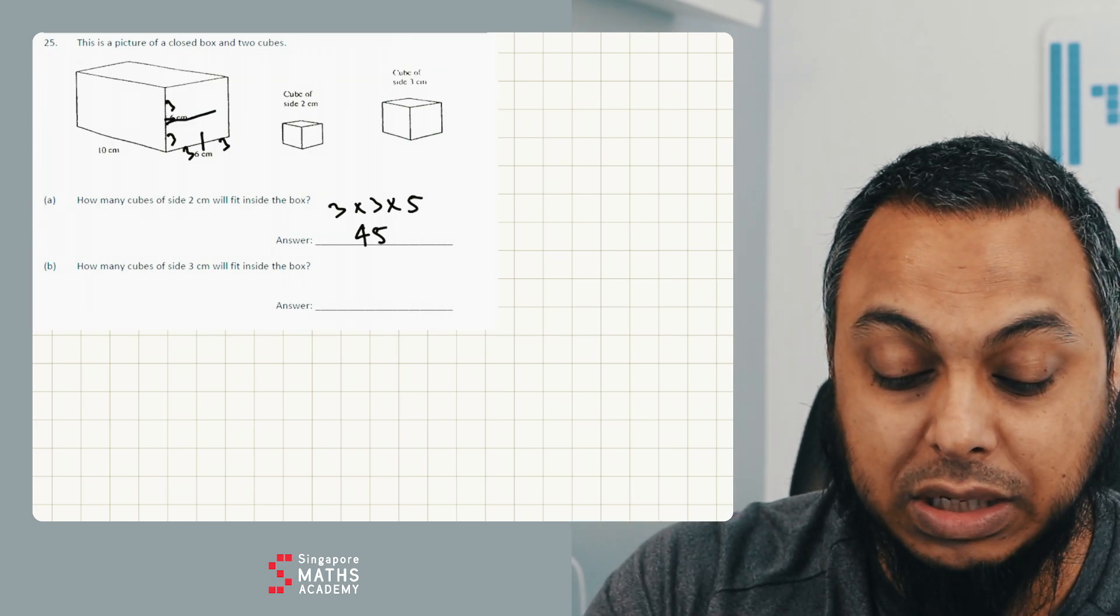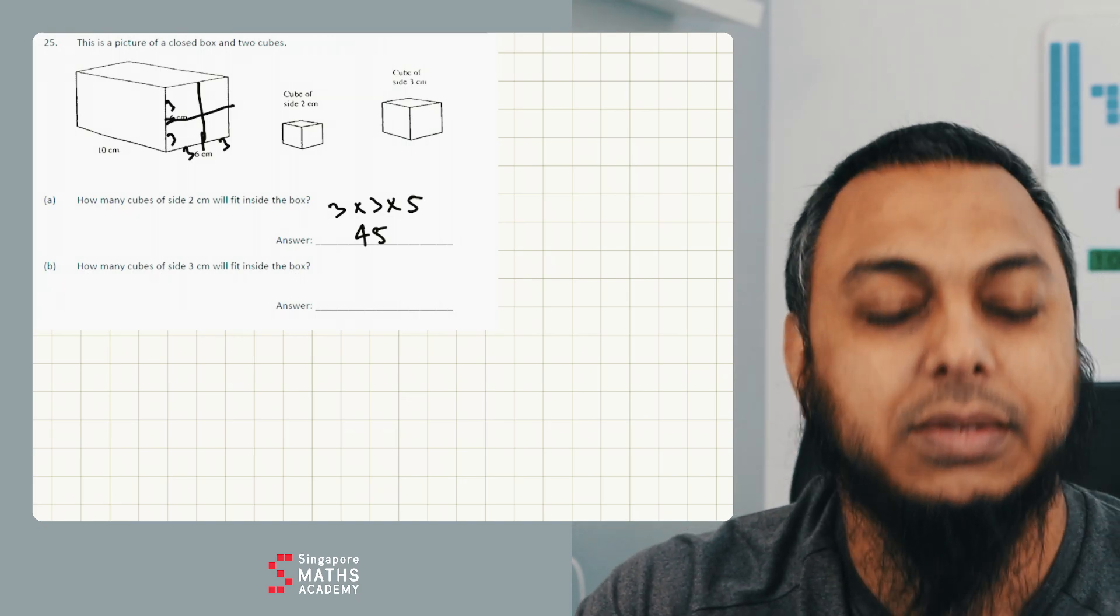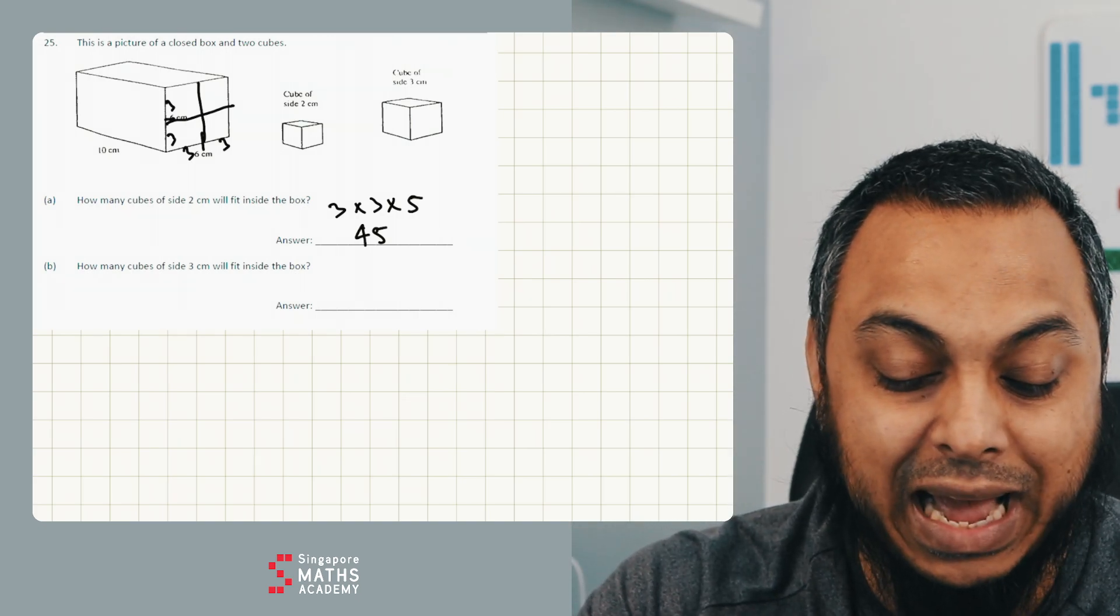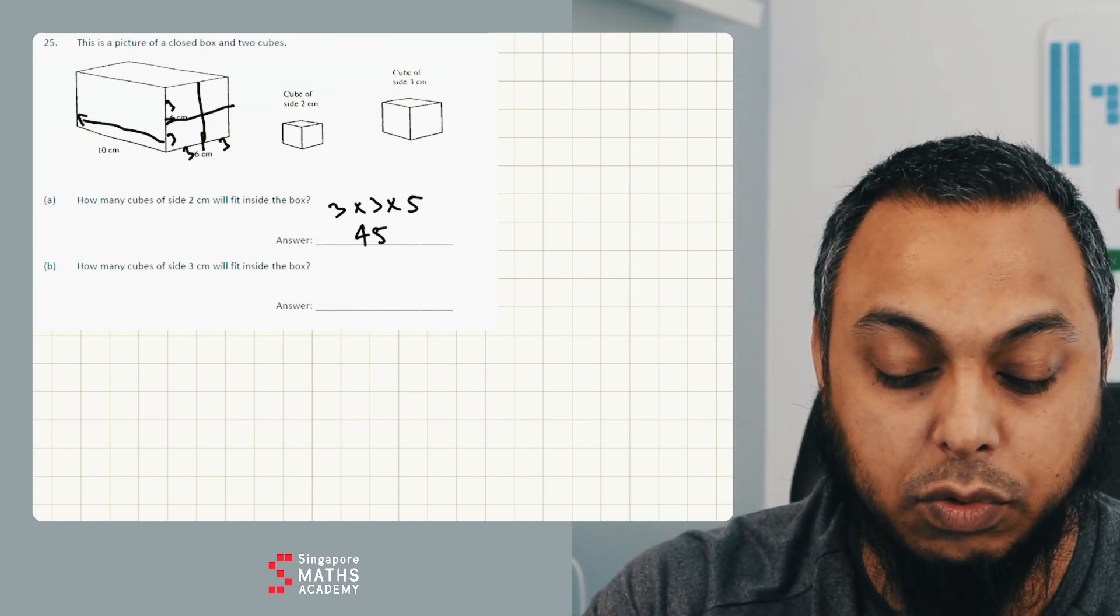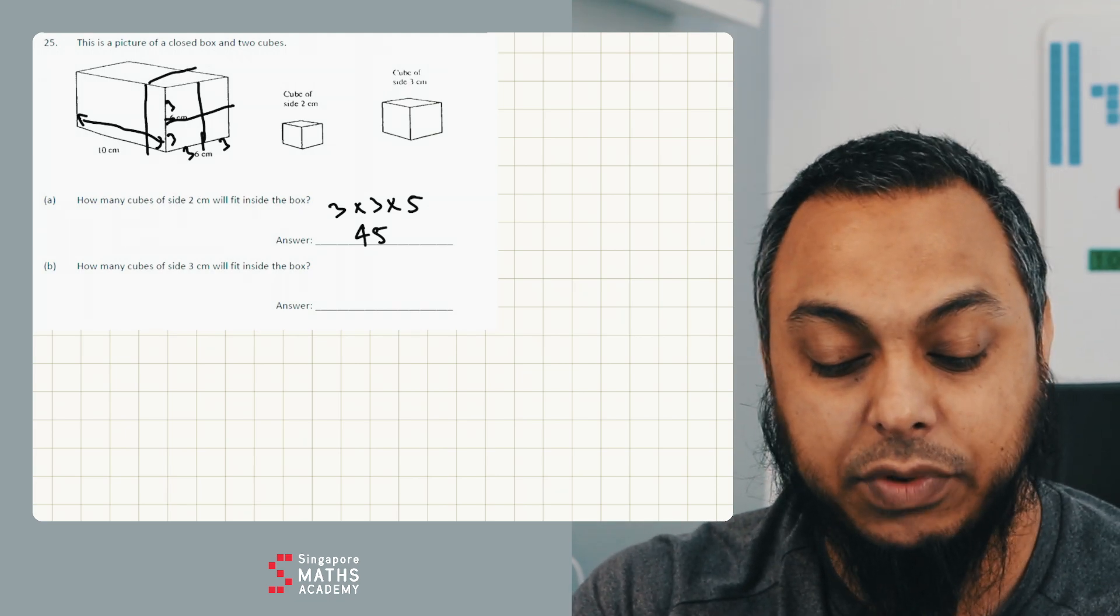That means altogether, I can have four cubes here of three centimetres. And so that's four and how many lots of fours can I have all the way down. So I know I can have one group of four definitely there. That's my four.